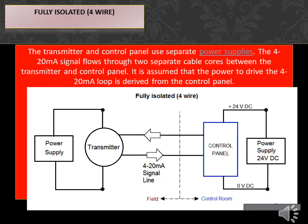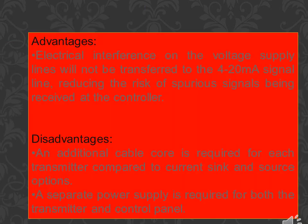Fully isolated, 4-wire. The transmitter and control panel use separate power supplies. The 4-20mA signal flows through two separate cable cores between the transmitter and control panel. It is assumed that the power to drive the 4-20mA loop is derived from the control panel. Advantages: electrical interference on the voltage supply lines will not be transferred to the 4-20mA signal line, reducing the risk of spurious signals being received at the controller. Disadvantages: an additional cable core is required for each transmitter compared to current sink and source options, and a separate power supply is required for both the transmitter and control panel.